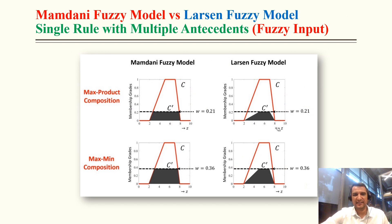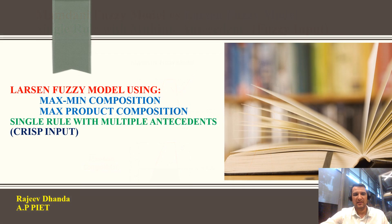The basic difference between Mamdani and Larsen is area: in Mamdani the area is more, in Larsen the area is less. Therefore, when computing defuzzification, the Larsen value will be less than the Mamdani value. Next we consider single rule with multiple antecedents with crisp input.